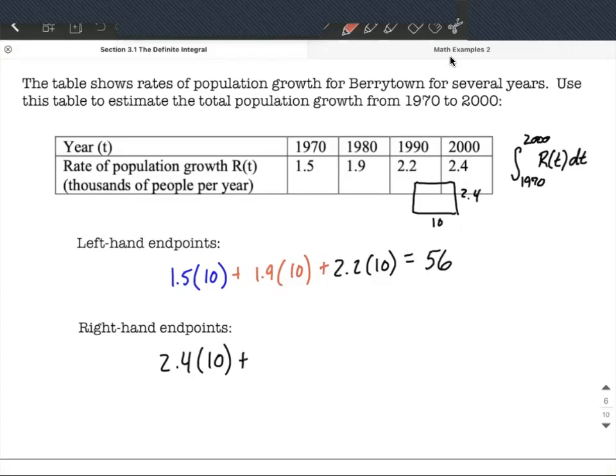Plus, now we go up to 2.2, I guess this should technically be a little bit lower than 2.4. So 2.2 is the height multiplied by 10 years, and then we'll finish this up going only up to 1.9 over, so 1.9 times 10.